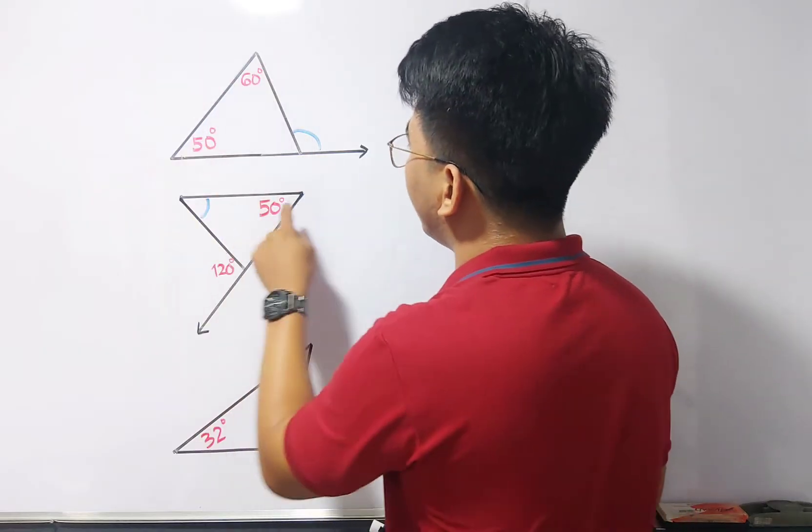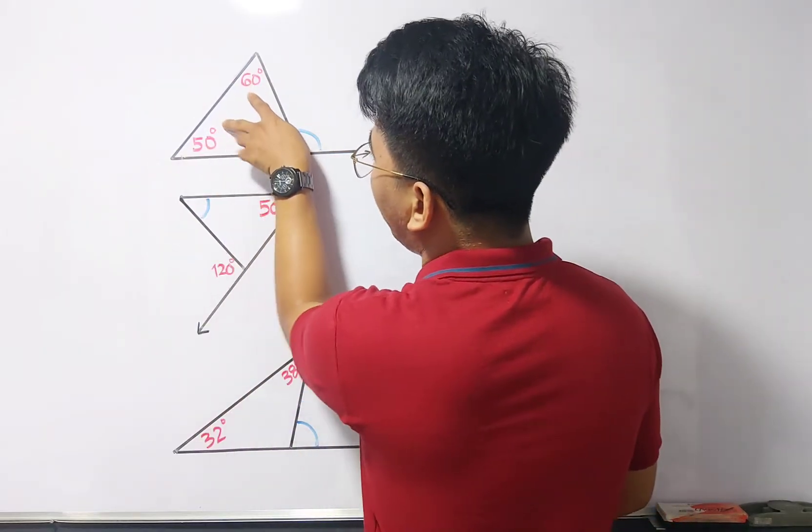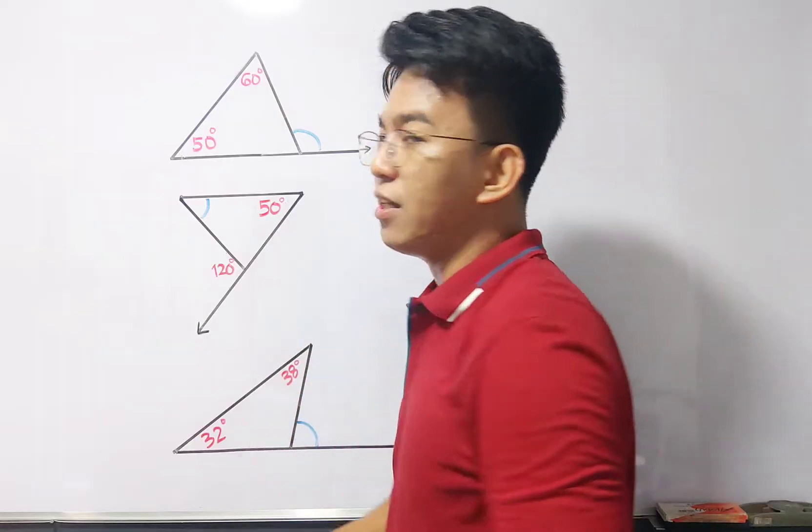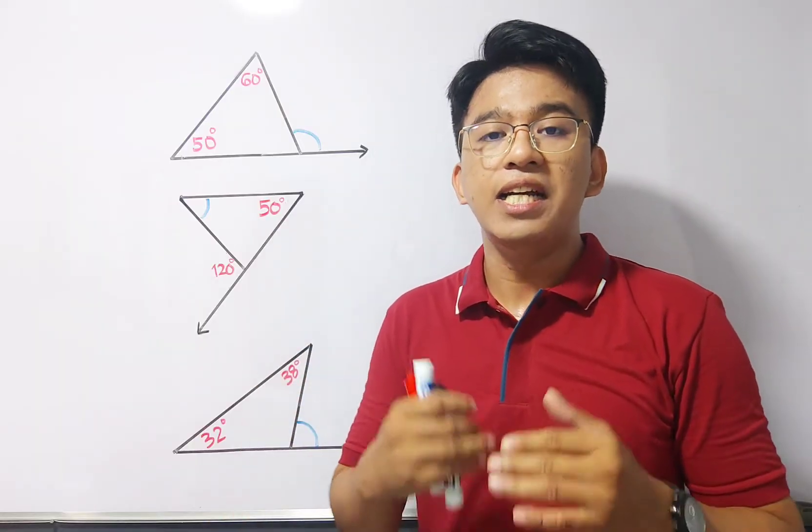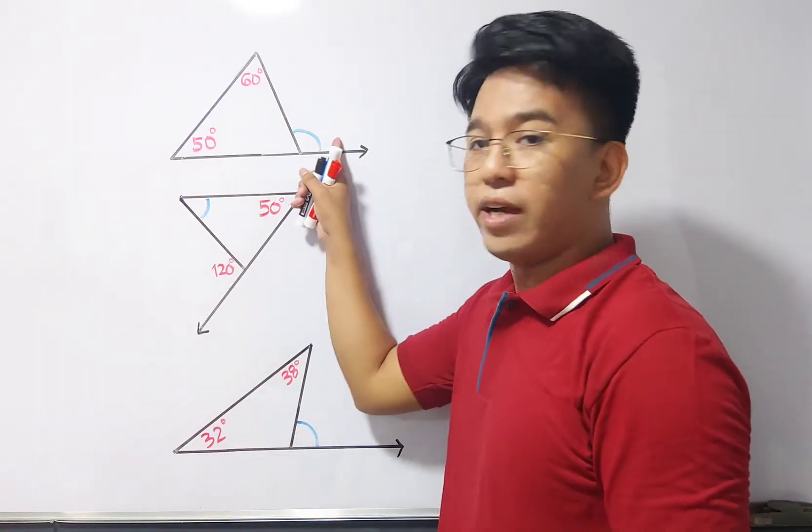Here in this triangle, this is your exterior, and ito yung dalawang interior angles, yung dalawang interior angles na non-adjacent with your exterior.